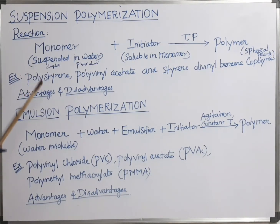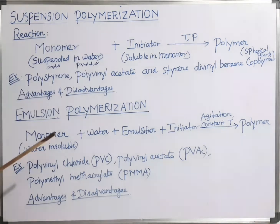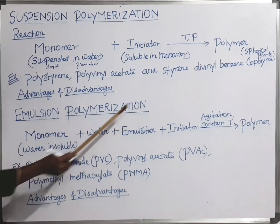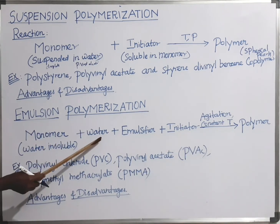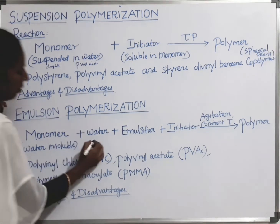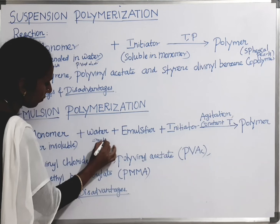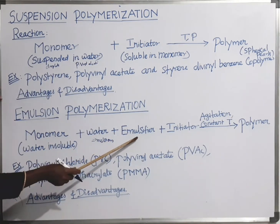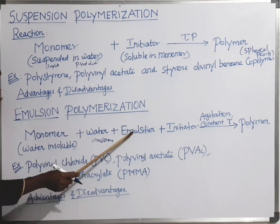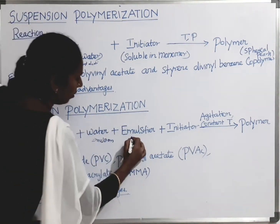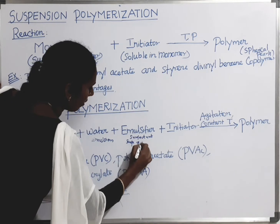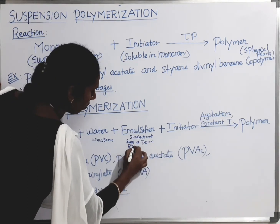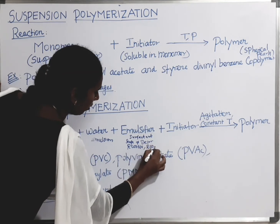Next is emulsion polymerization. The water-insoluble monomer is dispersed in an aqueous phase (water) to form an emulsion. This emulsion is stabilized by surfactants — soaps and detergents — such as RCOONa (sodium salt of carboxylic acid) and RSO₃Na.